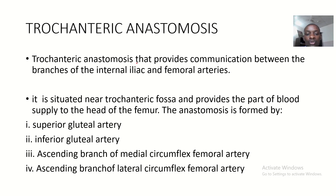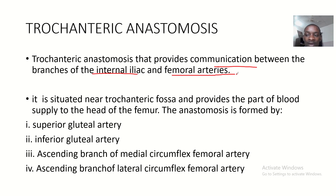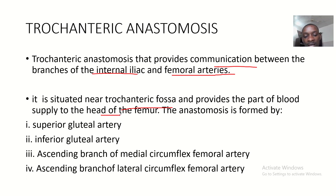The trochanteric anastomosis provides communication between the branches of the internal iliac and the femoral arteries. It is situated near the trochanteric fossa and provides part of the blood supply to the head of the femur.